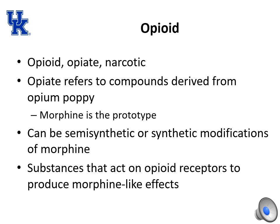Opioids are your semi-synthetic or synthetic modifications of morphine. If it's synthetic, it's completely made in the lab from chemicals. If it's semi-synthetic, it's still made in the lab but derived from or using part of those natural alkaloids, such as morphine, to make the new substance. Overall, these are substances that act on opioid receptors to produce morphine-like effects.